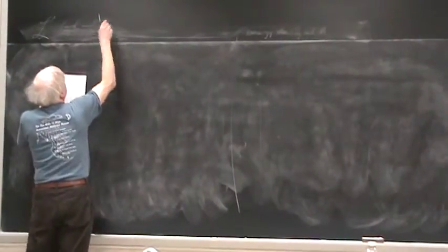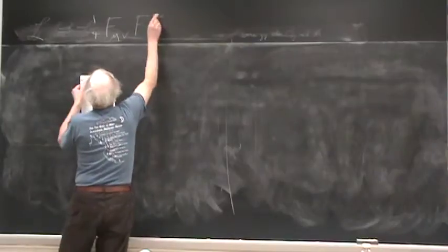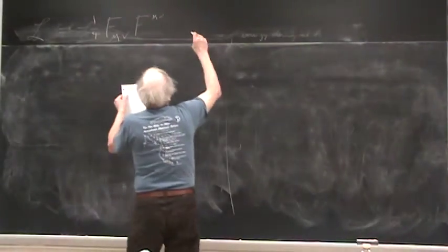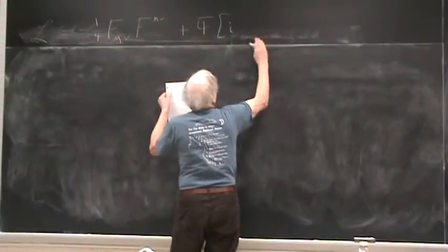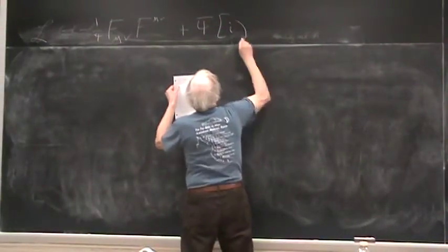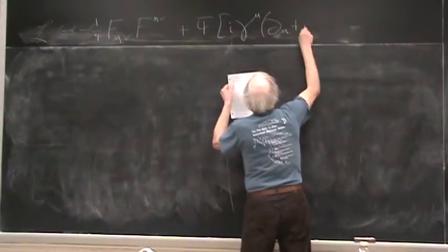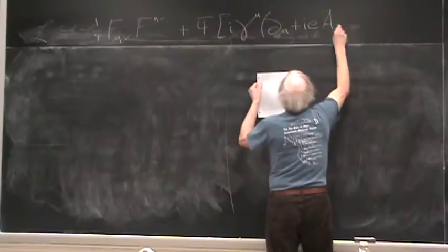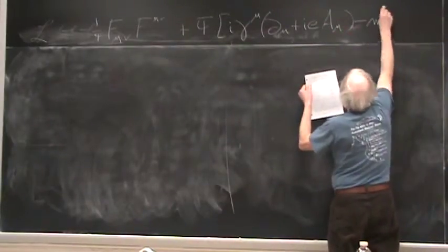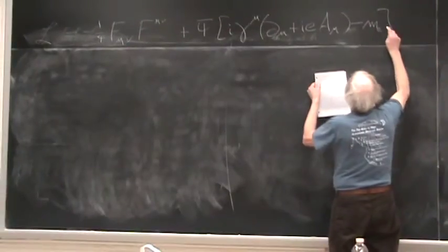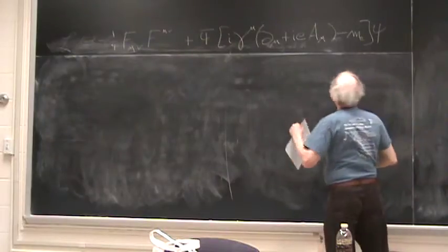It's minus a quarter F_μν² plus ψ̄ i γ^μ D_μ plus i e A_μ minus m ψ. Which is m_e if we're talking about electrons. There, that's about it.